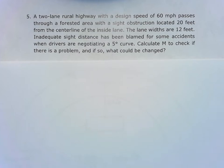For this last problem, problem 5 of the Chapter 8 FEP Highway Design homework, it's a two-lane rural highway with a design speed of 60 miles per hour that passes through a forested area with a site obstruction located 20 feet from the center line of the inside lane. The lane widths are 12 feet. Inadequate site distance has been blamed for some accidents when drivers are negotiating a five-degree curve. We're going to calculate M to check if there's a problem, and if so, what could be changed?